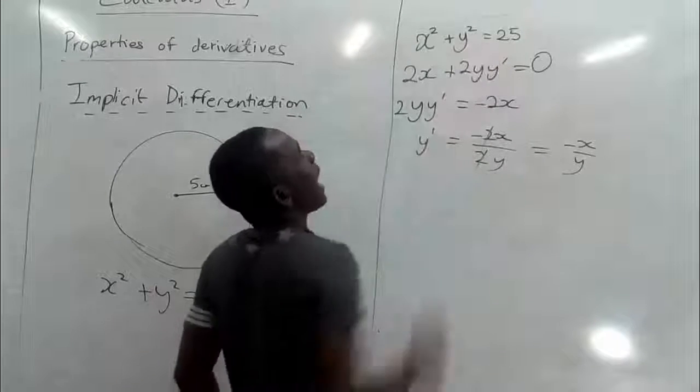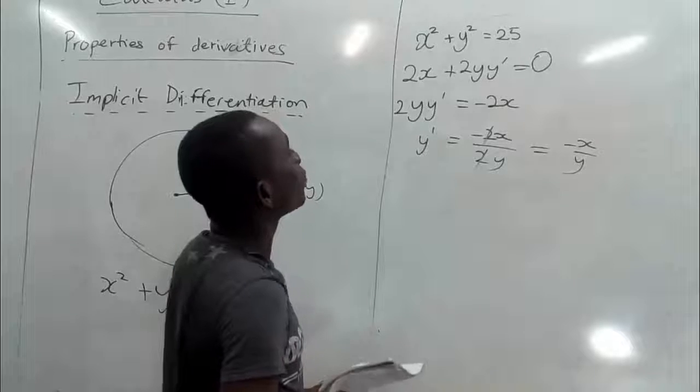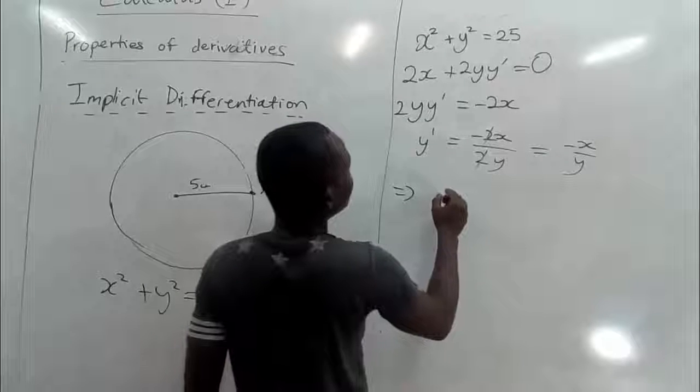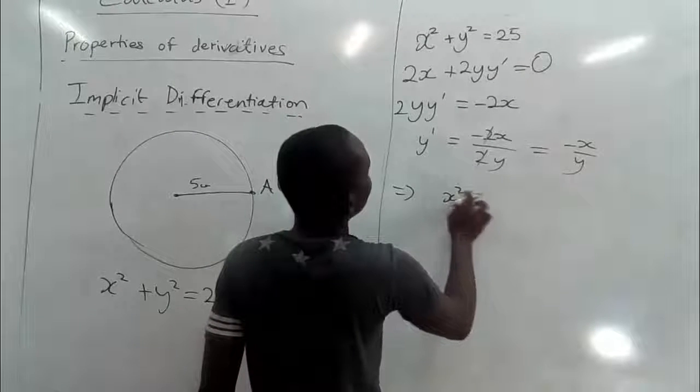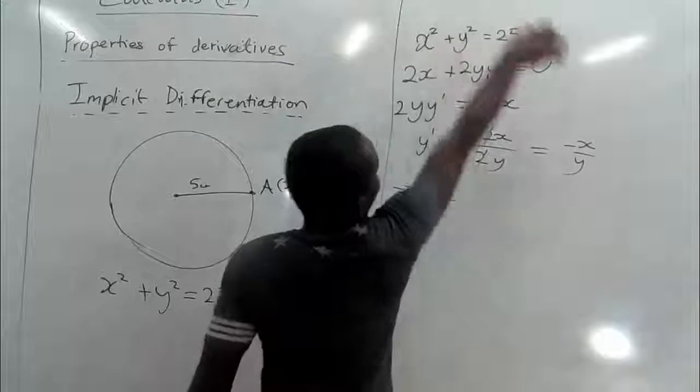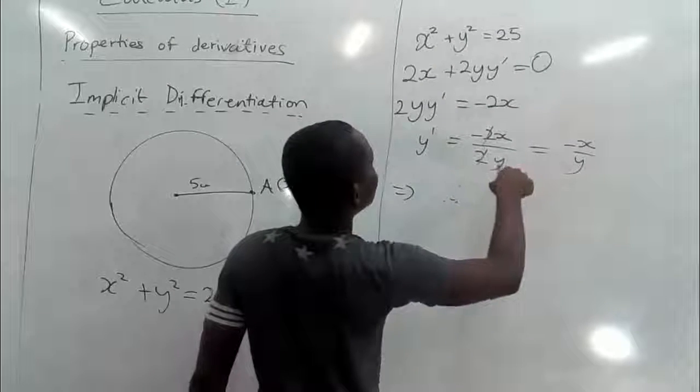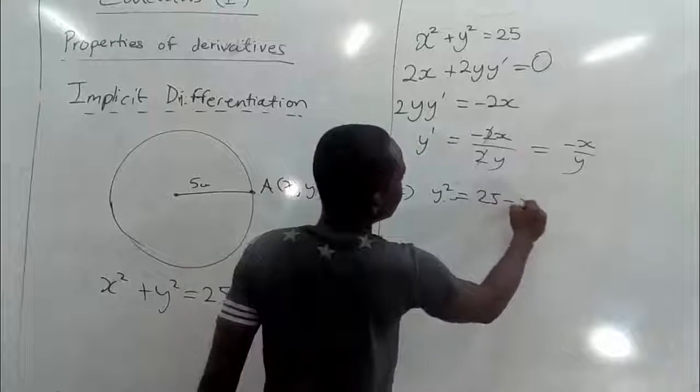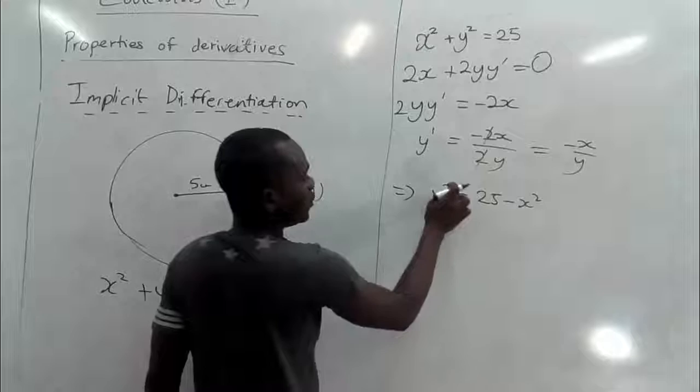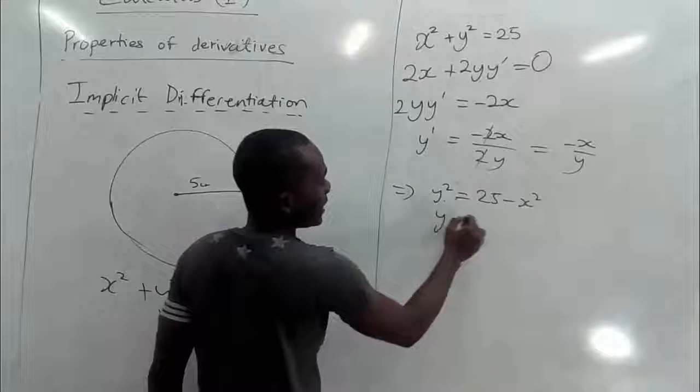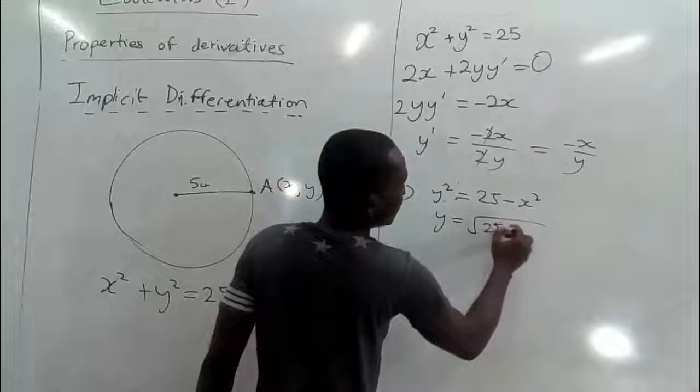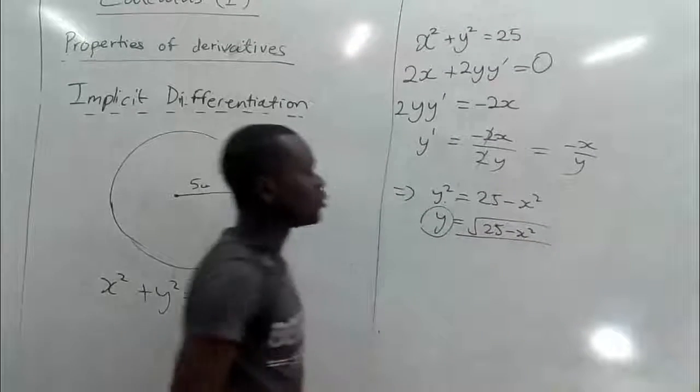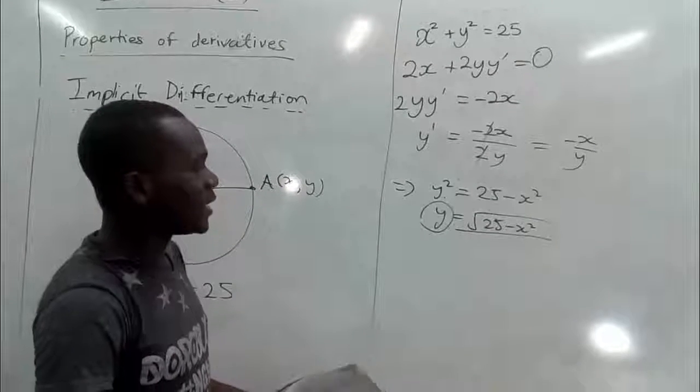Now we want to get rid of this y. So from our equation we can make y the subject. We will be having x squared moving to that side. We can make it into y squared equal to 25 minus x squared. We want to get rid of the squared here. So y is equal to square root of 25 minus x squared. So anywhere we see y you can place square root of 25 minus x squared there.